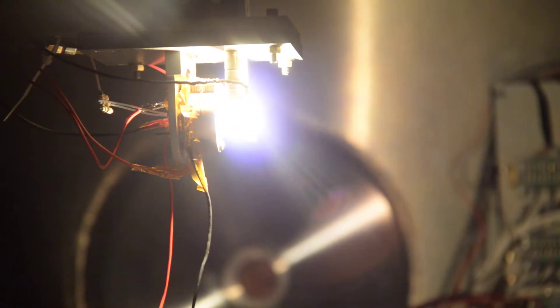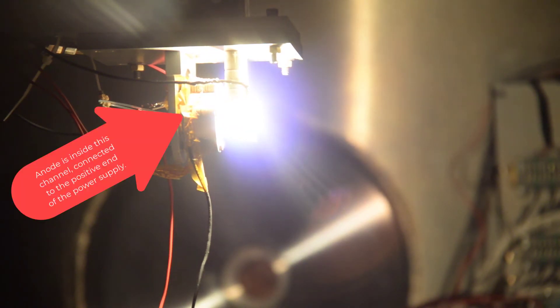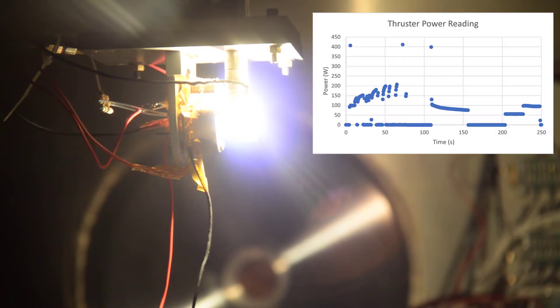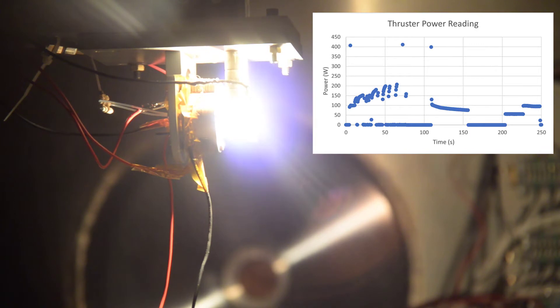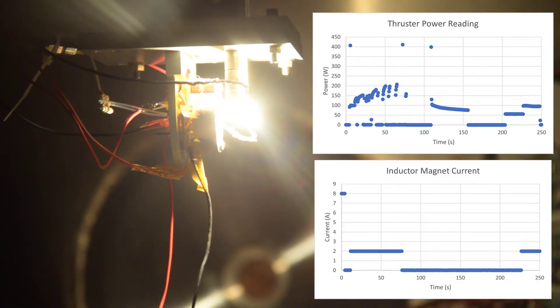To get a sense of how much power is actually going into the anode part, look at the thruster power reading. This will be derived from the actual anode voltage reading and the anode current reading readout. So that'll give you a sense of the power that's coming out of it for a given voltage and discharge current. Note also that there's about 2 amps of current going through the inductor magnets, which corresponds to roughly 200 gauss at the exit part of the chamber, or at least in the radial magnetic field part of the Hall thruster.